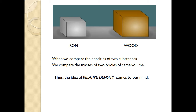Now I have shown two solid items: iron and wood. When we compare the densities of two substances, for example the volume of wood is more compared to volume of iron, but the mass of iron is more than mass of wood. So when we compare densities of two substances, we compare the masses of two bodies of the same volume. That is the idea of relative density.